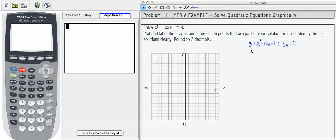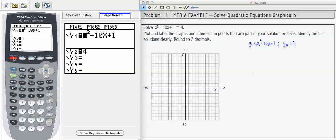Once you've identified y1, in this case as x squared minus 10x plus 1, and y2 as 4, then you're going to go to your y equals and enter both of those onto your list, y1 and y2.